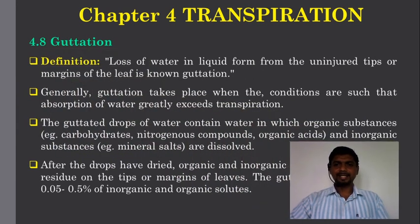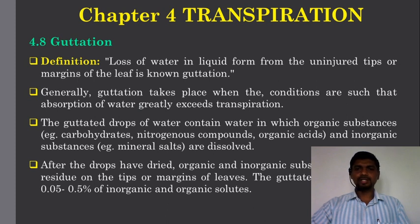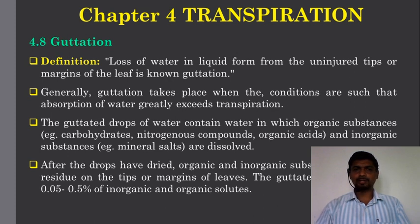By definition, guttation is the loss of water in liquid form from the uninjured tips or margins of the leaf. Guttation takes place when the conditions are such that absorption of water greatly exceeds transpiration. In transpiration, there is a heavy loss of water through the aerial part of the plant. In addition, guttation takes place when the absorption of water greatly exceeds transpiration, and the plant loses water in liquid form from the uninjured tips or margins of the leaf.